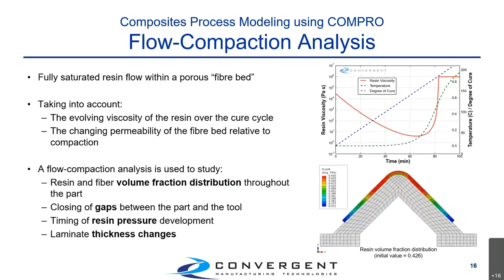Flow compaction analysis represents our laminate as a fully saturated fiber bed with resin able to flow through the part. This takes into account the evolution of resin viscosity during the cure cycle and the permeability of the fibers relative to compaction due to autoclave pressure. From this we can study the volume fraction distribution — as resin flows from one area to another or bleeds out of the part. We can also study thickness changes in the laminate induced by resin flow and track the evolution of resin pressure.